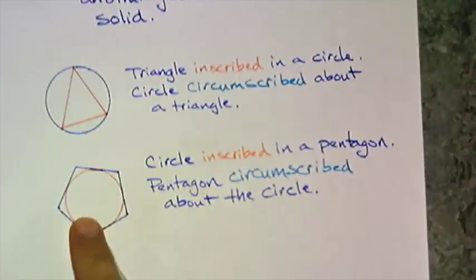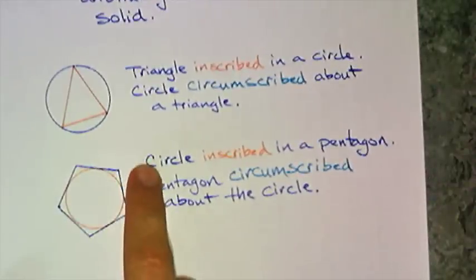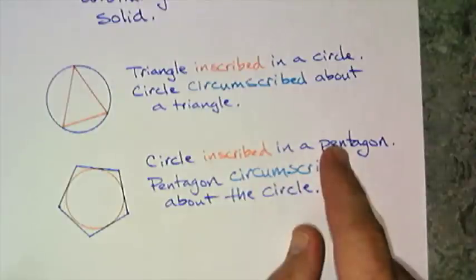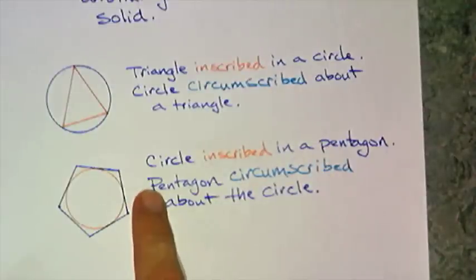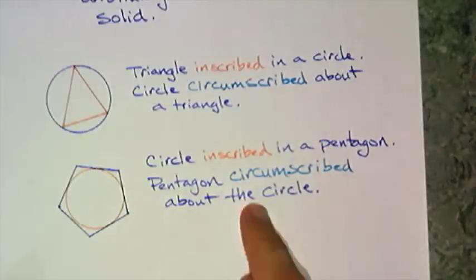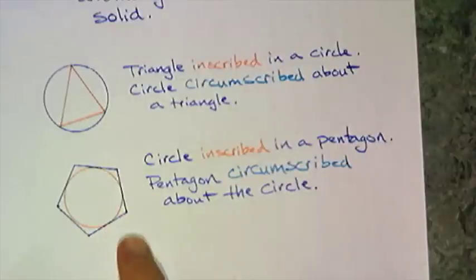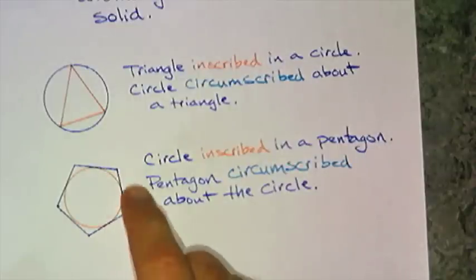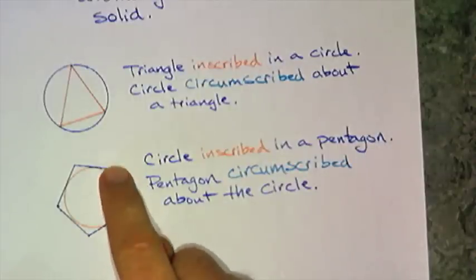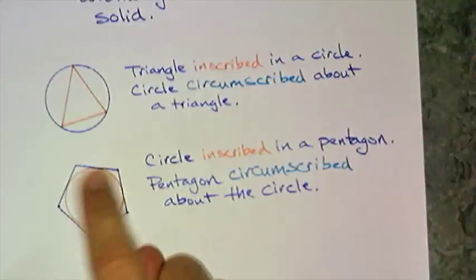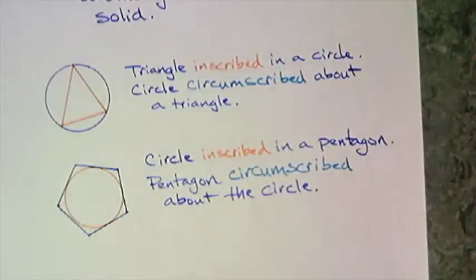If I make a polygon around a circle, the circle is inscribed in a pentagon, or the pentagon is circumscribed about the circle. The difference here is that we don't hit the vertices anymore. We're going to make every edge tangent to the circle. All right? I hope that's not too bad. And finally, your last word for today is concentric circles.